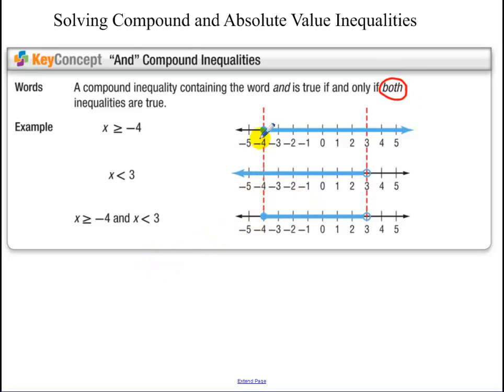So you start at negative 4 and it's numbers greater than or equal to negative 4 and the numbers that are less than or equal to 3. So it's everything in between here. Think about it as the numbers that are sandwiched in between negative 4 and 3.